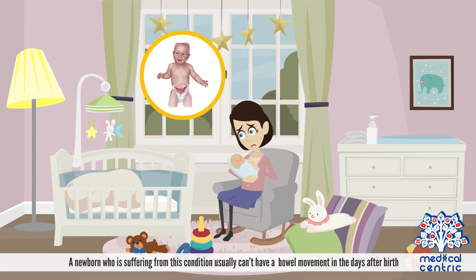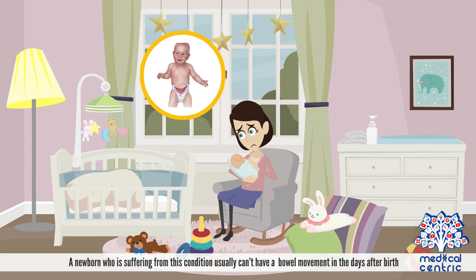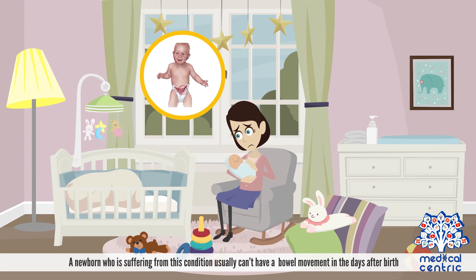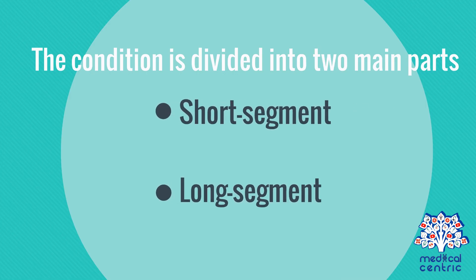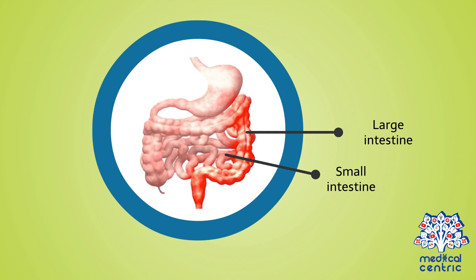A newborn suffering from this condition usually cannot have a bowel movement in the days after birth. The condition is divided into two main parts – short segment and long segment – depending on how much of the bowel is affected. The condition majorly affects the large intestine, or colon, but rarely the small intestine may be affected.